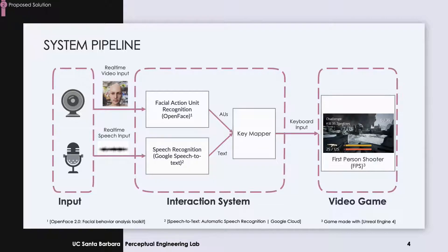Here is an overview of our pipeline. Our primary input method, detected by a camera, is the user's face. We process the video in real-time using OpenFace 2.0. Our secondary input method is speech, which we convert to text using a real-time speech API. The output from OpenFace and the speech recognition — facial action units or AUs and text — are mapped to the keyboard, and each key is then mapped to an action in the video game.